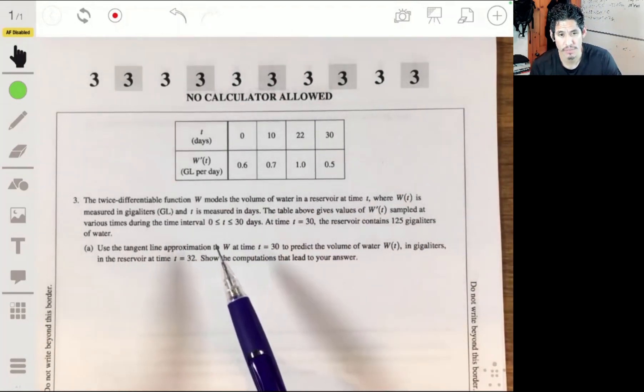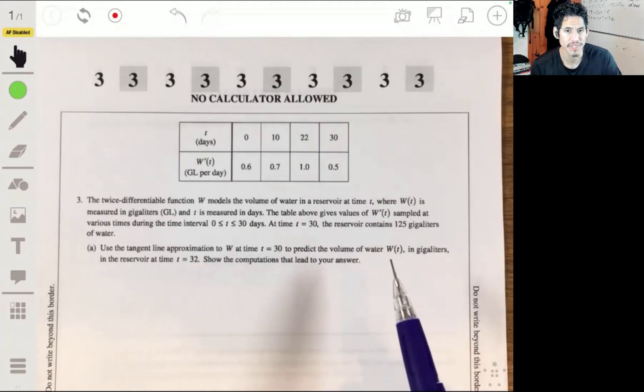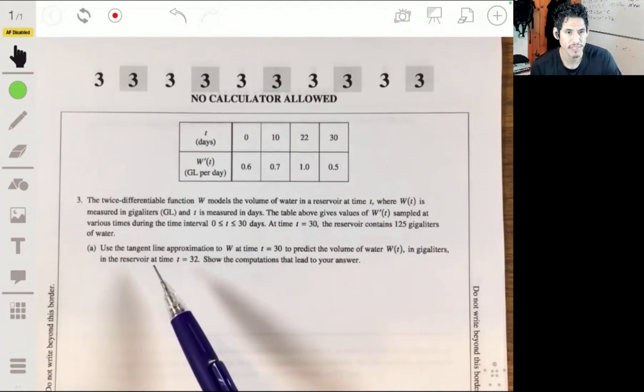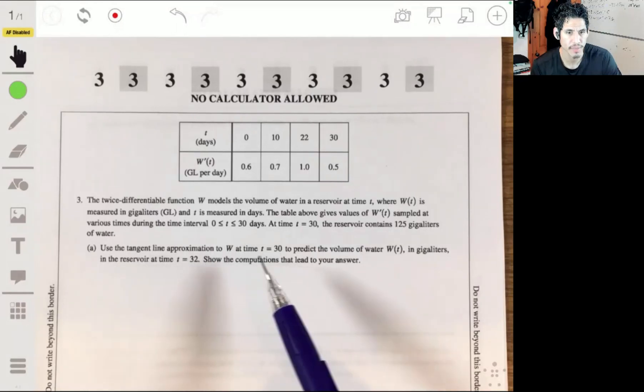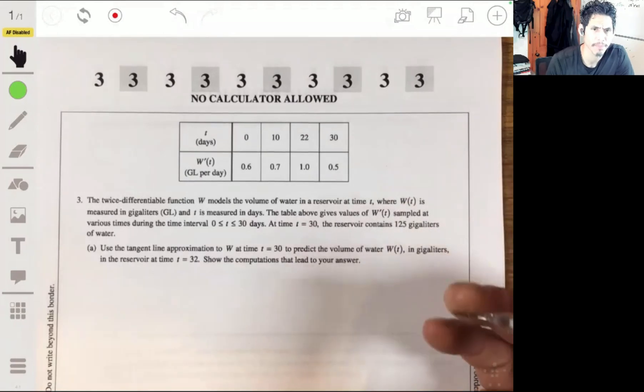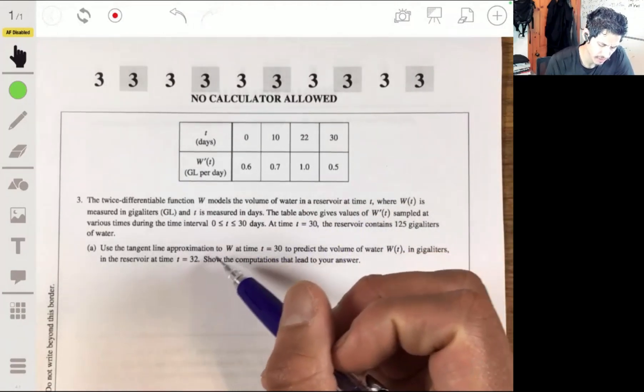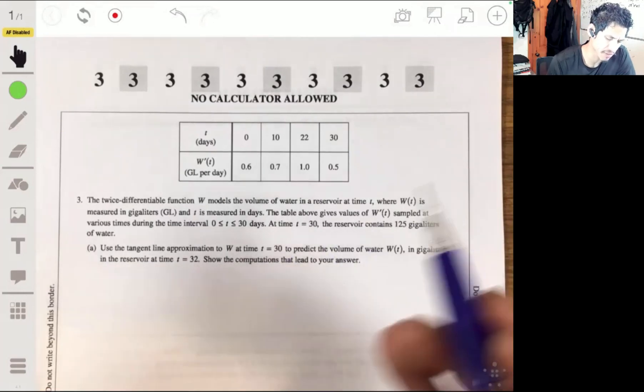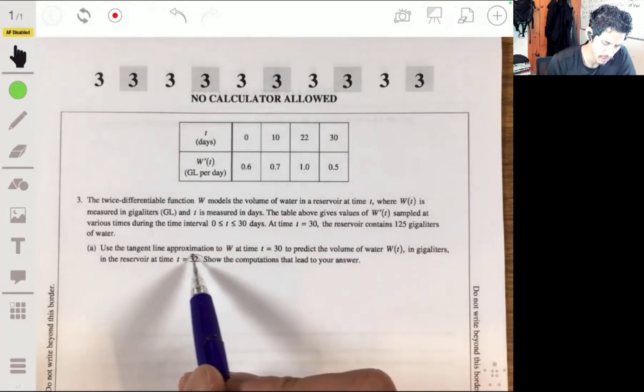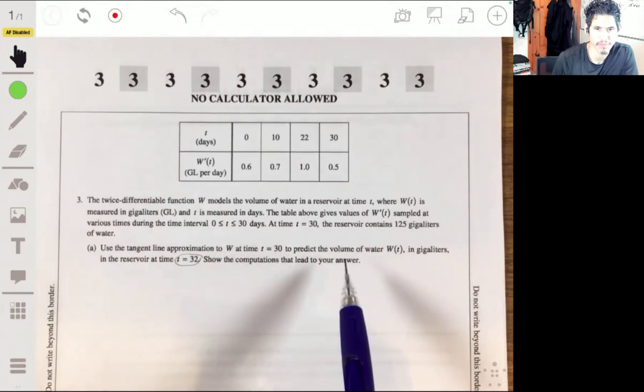Use a tangent line approximation to w at time t equals 30 to predict the volume of water, w of t in gigaliters, in the reservoir at time t equals 32. Show the computations that led to your answer.